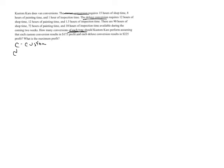C will be the custom conversion and D will be the deluxe conversion. From here on, the profit objective function and all the inequalities — restrictions, limitations, constraints, whatever you want to call them — will contain C and D.